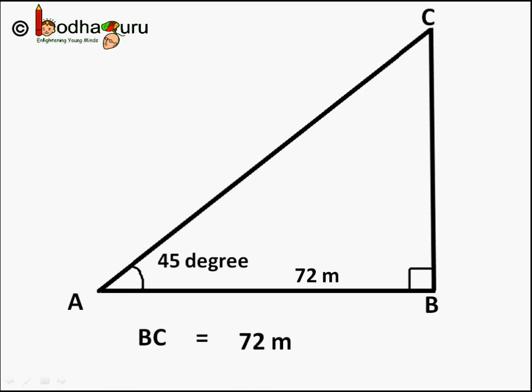So this way, given an angle and the measure of either opposite side or adjacent side, we can find the measure of the other side using trigonometric ratio tan.